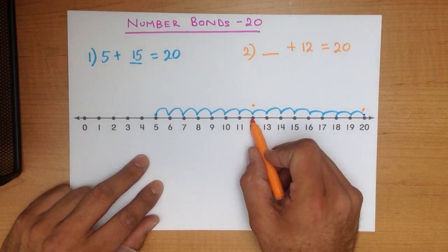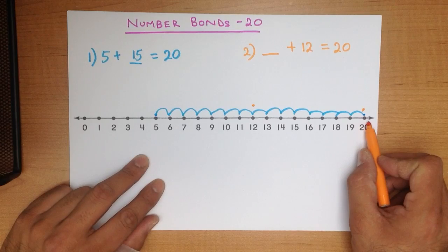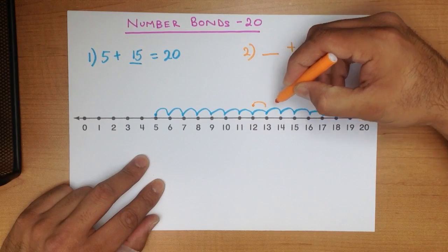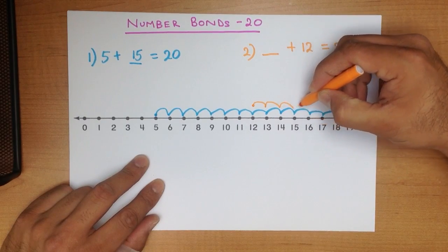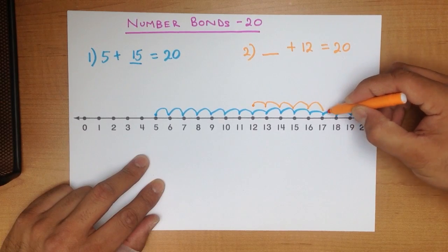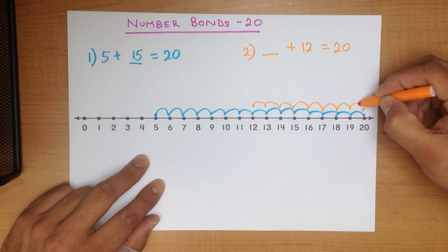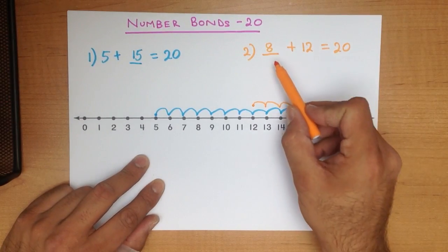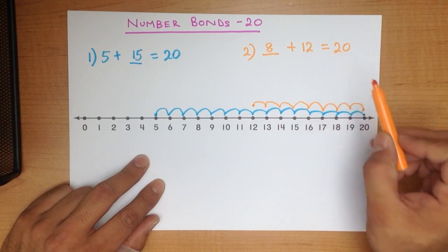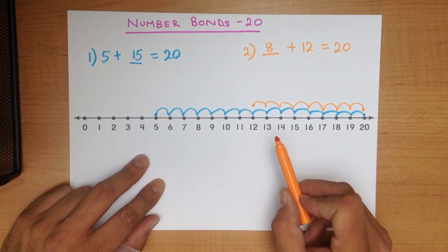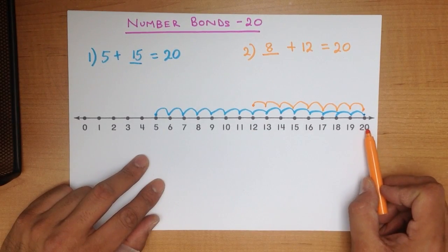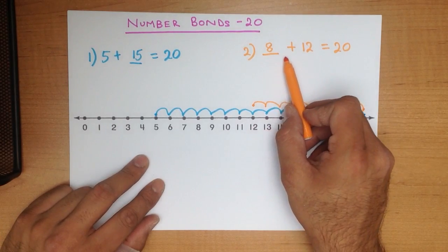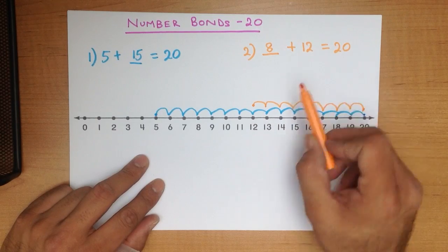So how many jumps do we have to make from 12 to get to our answer of 20? Let's go through this: 1, 2, 3, 4, 5, 6, 7, 8. And that is the answer. 8 plus 12 equals 20. We started at number 12, we had to finish at 20, and we made eight jumps. 8 plus 12 equals 20.